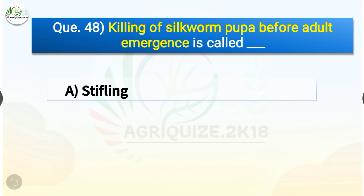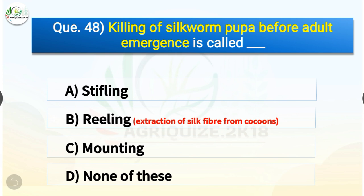Question number forty-eight: killing of silkworm pupa before adult emergence is called — options are stifling, reeling, mounting, or none of these. The correct answer is option A, stifling. Killing of silkworm pupa before adult emergence is called stifling, whereas reeling is the extraction of silk thread from cocoons.